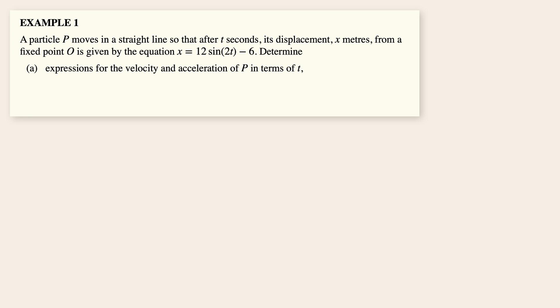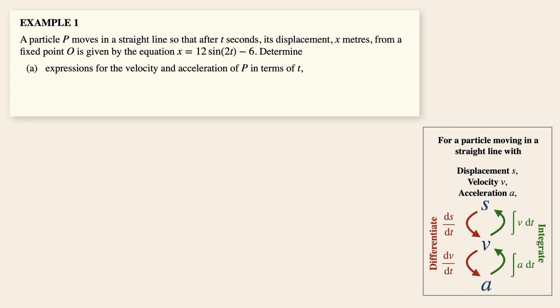Now whenever we do kinematics related questions, always have this diagram ready in your mind. In order to get the velocity expression, simply differentiate the displacement equation with respect to t, which gives us 2 times 12 cosine 2t. Simplifying, we will then have 24 cosine 2t.